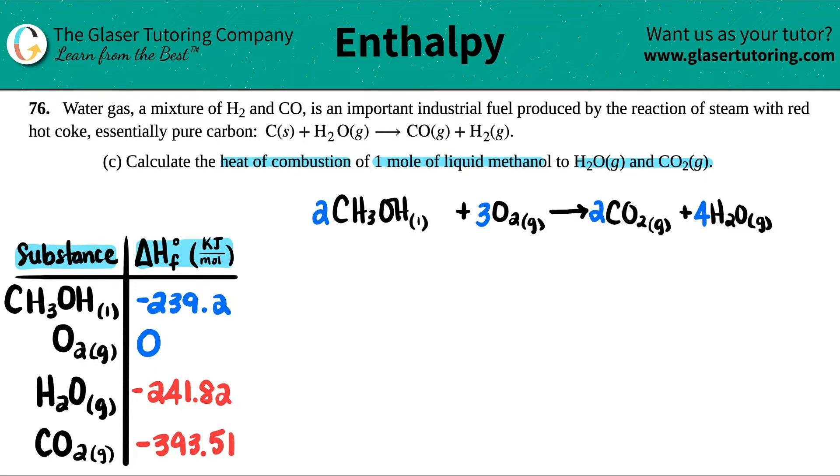Balanced equation done. Next, I need to add the delta H values for each compound. I have -239.2 kJ/mol for liquid methanol CH3OH. O2 is zero. CO2 is -393.51. And H2O gas is -241.82.